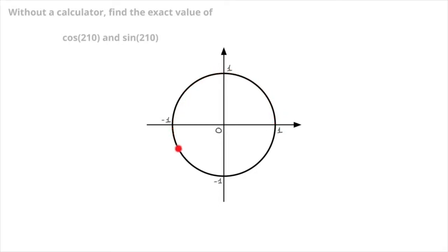So that would be approximately here. I'll just add that point right here, and I'll go ahead and call that point P. Its radius OP corresponds to 210 degrees anticlockwise.